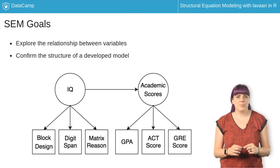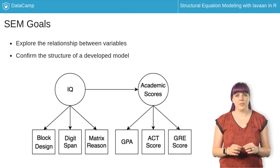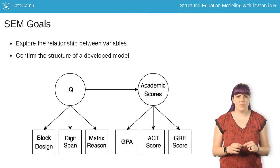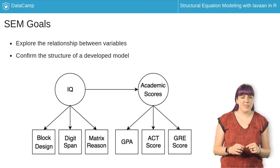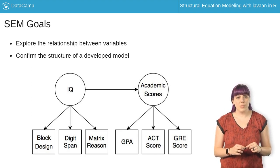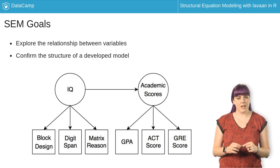The main goal of SEM is to explore the relationship between variables, similar to regression analyses. Furthermore, SEM allows you to confirm if previously developed models fit well with new data, which often occurs after an exploratory analysis, like a factor analysis.